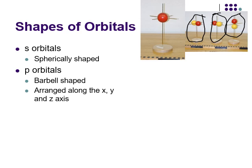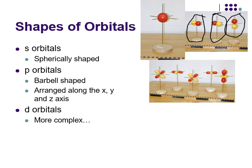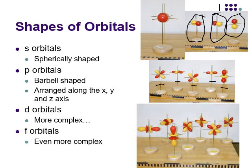D orbitals come in sets of five. Most look like X's arranged around various axes, except one looks like a P orbital with a donut around its middle — you don't need to worry about those shapes, but you do need to know D orbitals come in sets of five. Finally, F orbitals come in sets of seven. Their shapes are even weirder — you don't need to know those either.